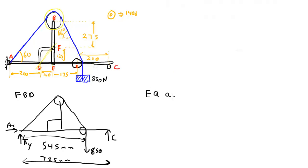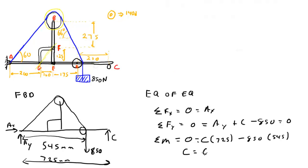I can do the sum of forces in the x direction equals 0 equals AX. Sum of forces in the y direction equals 0 equals AY plus C minus 850 equals 0. We can then write the sum of moments around point A because that has two unknowns equals 0. That is C times 725 minus 850 times 545. And if we do the math,